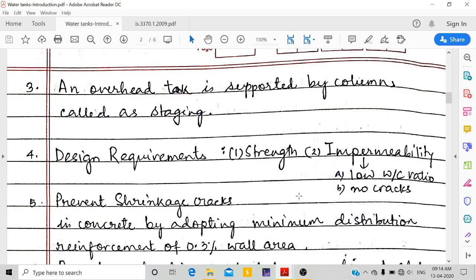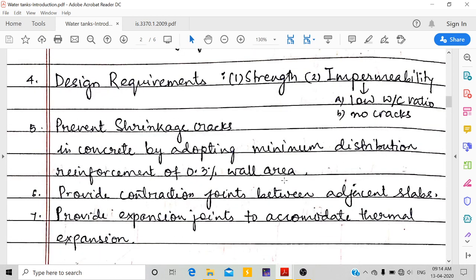An overhead tank is supported by columns called staging. For design requirements, we should consider two points: one is strength, another is impermeability. We don't want it to leak, so it should have water tightness. For this, you should have less water-cement ratio and there should not be any cracks.